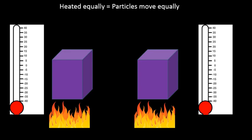Also, in the lesson, it talks about when objects are heated equally, the particles will move equally. As an example, if we have two substances, let's say they're the same metal, and we heat them equally, the temperature will rise equally.